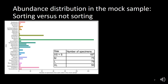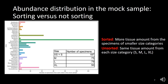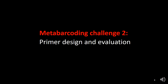The way I address this is by building two mock samples. One I call sorted, which is a way to balance for the amounts of tissue coming from each specimen, because we have a lot more in the small size category. And I also have an unsorted mock sample, for which I will basically get an equal amount of tissue from each of these size categories. So that was challenge number one.